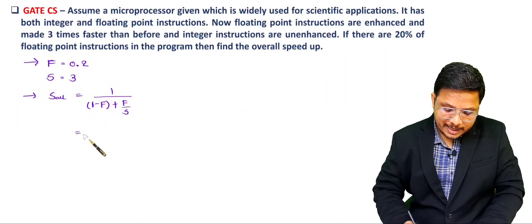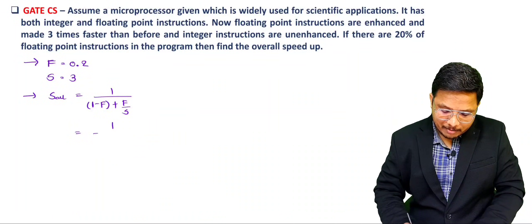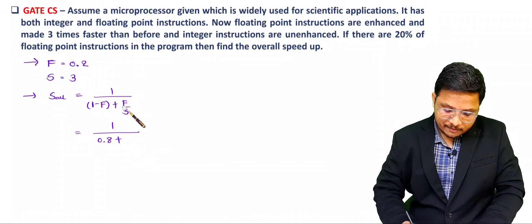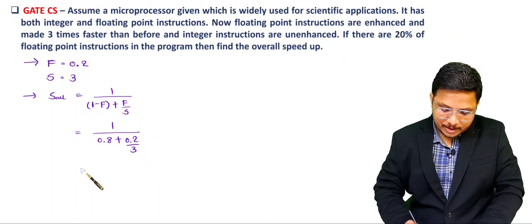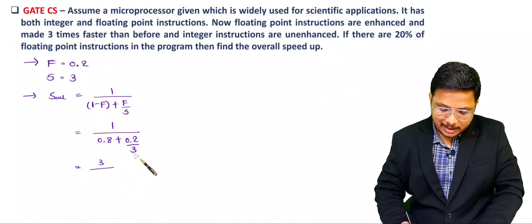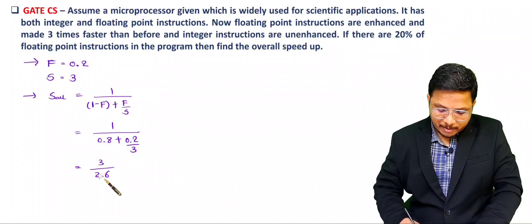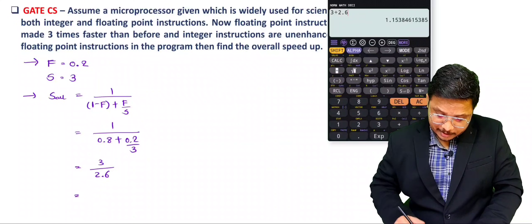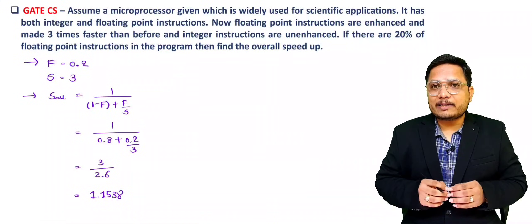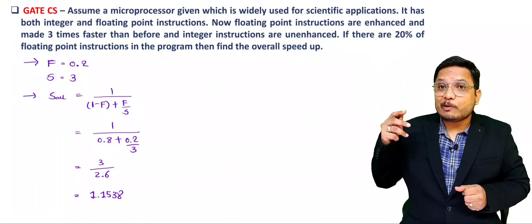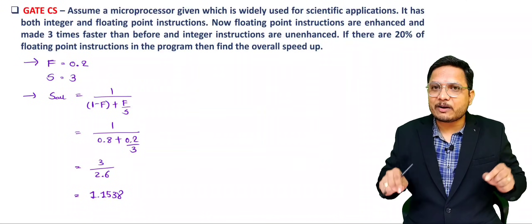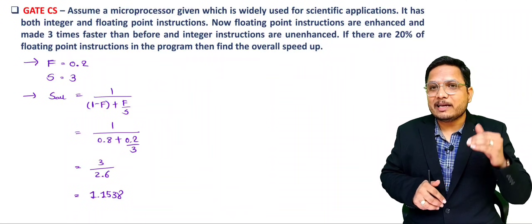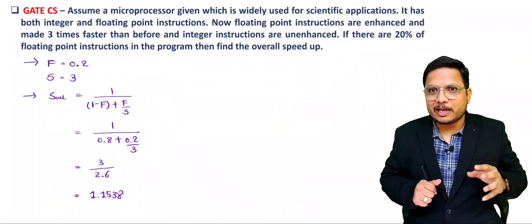Substituting the data: 1 divided by [(1 − 0.2) + (0.2/3)] = 1 divided by [0.8 + 0.2/3]. Taking LCM, the denominator becomes (3 × 0.8 + 0.2) / 3 = (2.4 + 0.2) / 3 = 2.6/3. So the result is 3/2.6 = 1.1538. Even though we scaled floating point instructions by 3 times, the overall speed of this scientific processor increases by only 1.15 times.